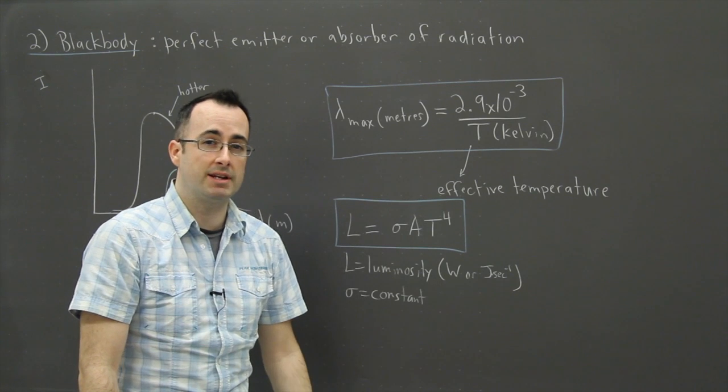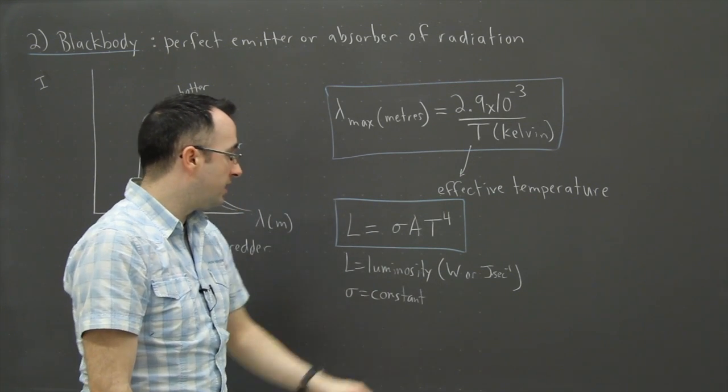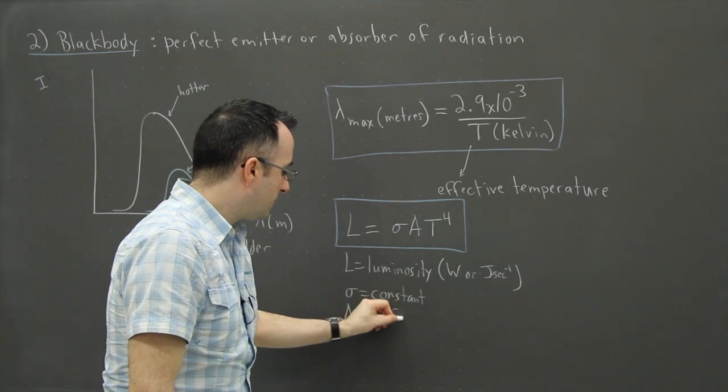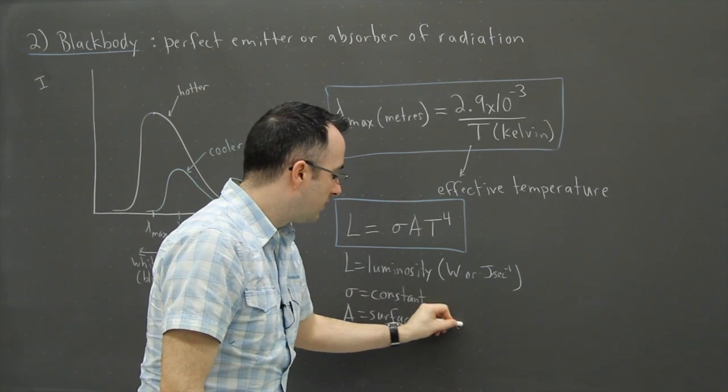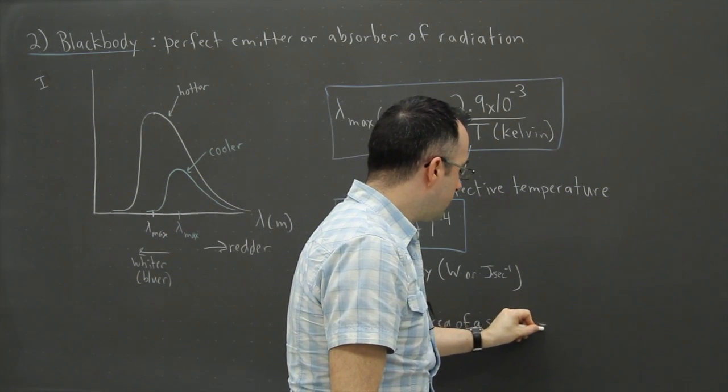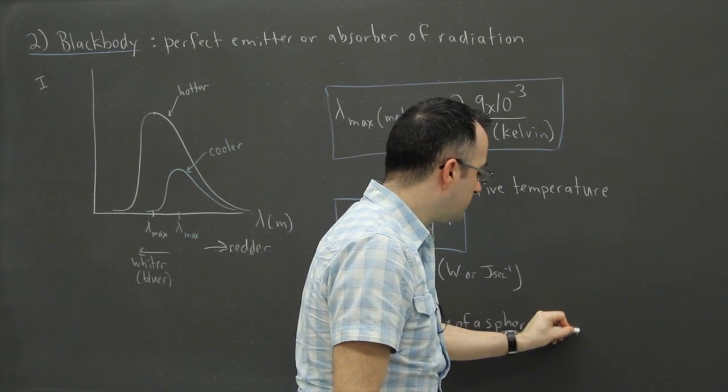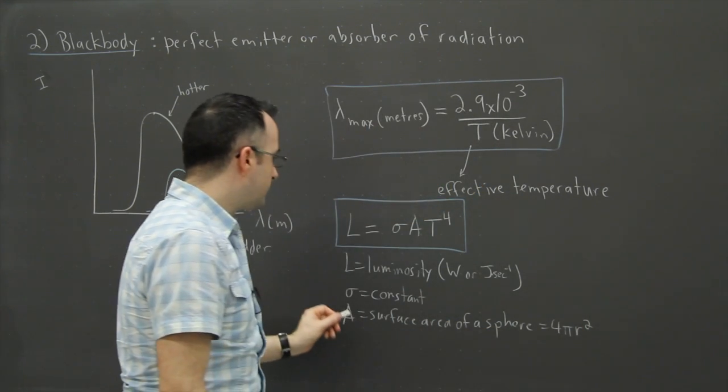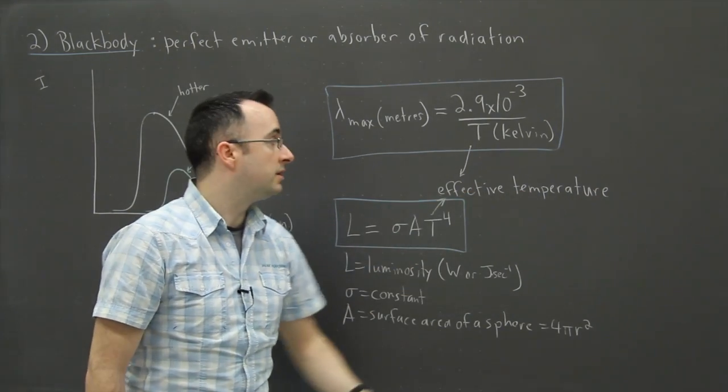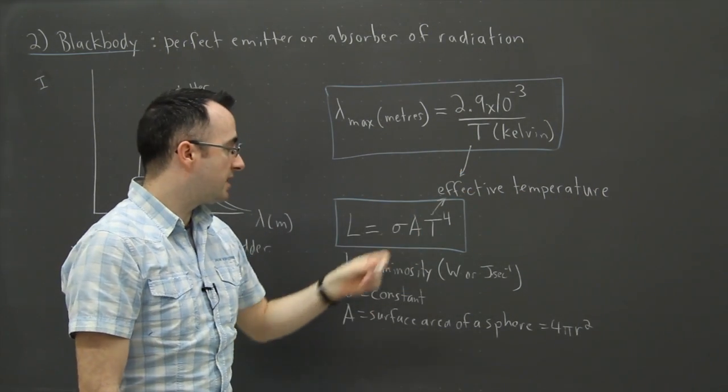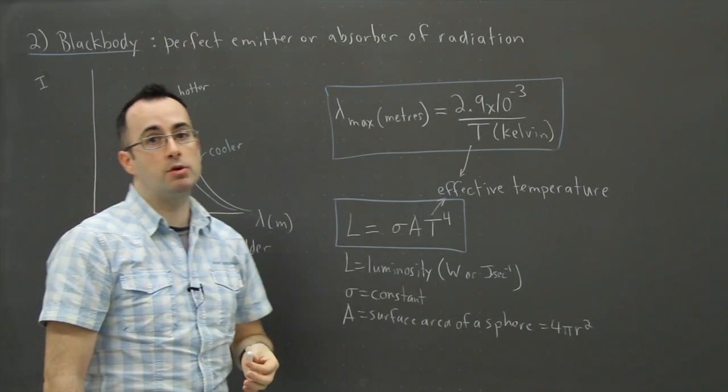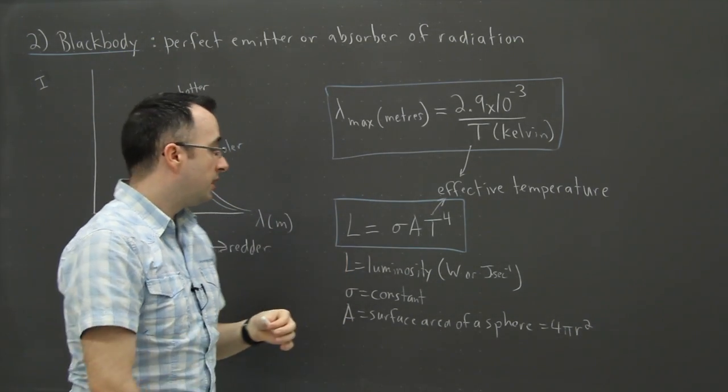You can find that on the second page of your data booklet. A is the surface area of a sphere. You should be getting used to seeing this, we see this a lot. Surface area of a sphere is 4 times pi times r squared. And finally we have T, and T is the same thing here. T is the effective temperature in Kelvin except this time to the power of 4.